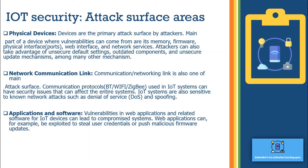The network communication link is another main attack surface. Typically an IoT device used in the consumer sector uses short-range protocols like Bluetooth, Wi-Fi, and Zigbee. If security is not robust — for example, if you are using weaker security like WEP — that can lead to an attack. Instead, we should use WPA3 or WPA2. IoT systems are also sensitive to network attacks such as denial of service and spoofing.